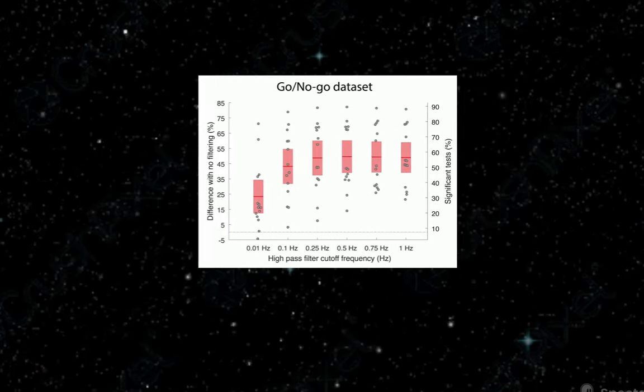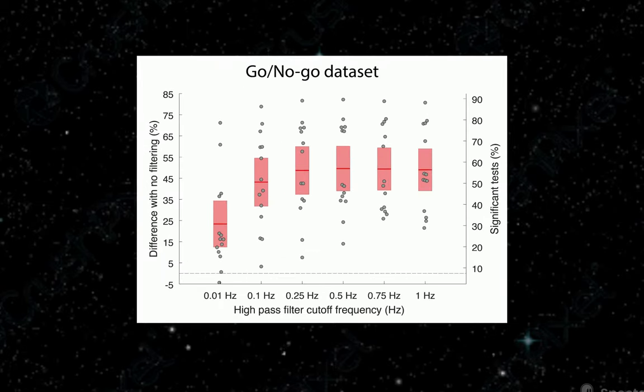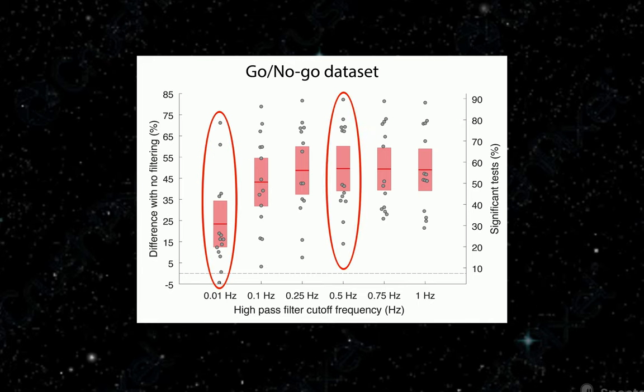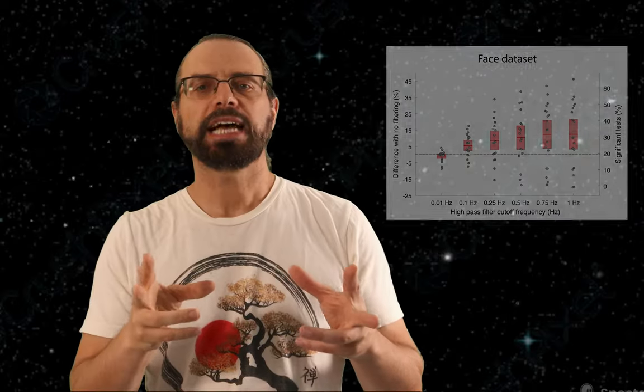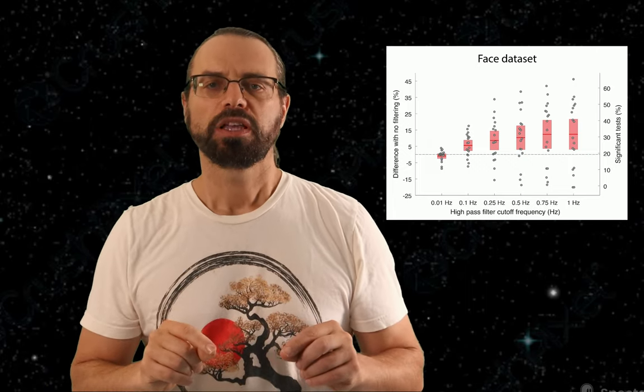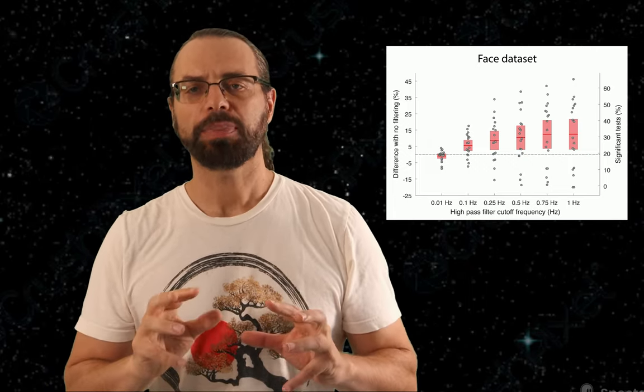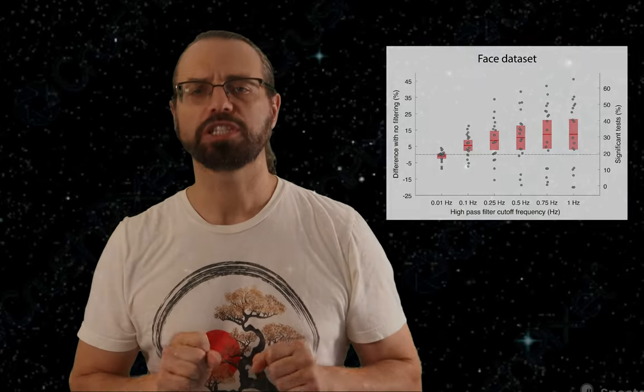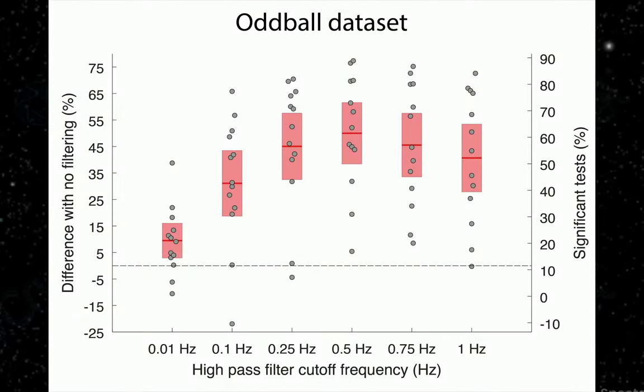Now let's look at other filters' cutoff frequencies. We can see that for the go-no-go task, the optimal filter is about 0.5 Hz. And it is dramatically better than 0.01 Hz, more than doubling the number of significant channels. For the face task, the increase in significance is not as large. However, this task had a high-pass filter at 0.01 Hz during the data acquisition. For the oddball task, we see a similar effect as with the go-no-go task, with the optimal cutoff frequency at 0.5 Hz.